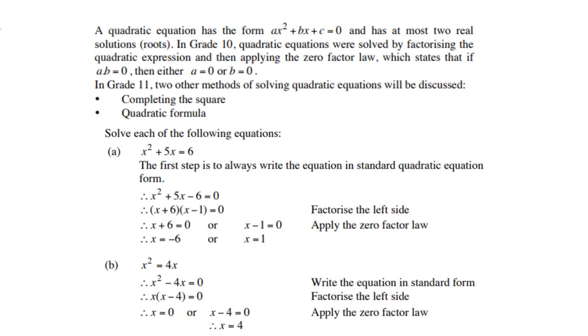A quadratic equation has the form ax² + bx + c = 0 and has at most two real solutions, or roots. In Grade 10, quadratic equations were solved by factorizing the quadratic expression and then applying the zero factor law, which states that if ab = 0, then either a = 0 or b = 0. In Grade 11, two other methods of solving quadratic equations will be discussed: completing the square and the quadratic formula.